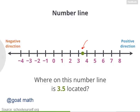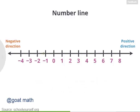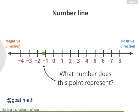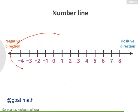Sure enough, 3.5 appears halfway between 3 and 4 on the number line. As a final challenge, take a look at this point — it represents negative 1.25. So the number line is a graphical, or visual, way to represent all the numbers. We'll be using number lines, also known as axes, all throughout algebra.